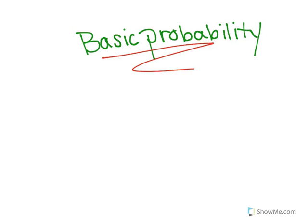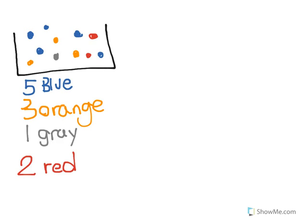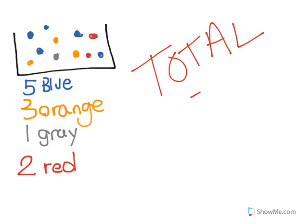Basic probability. The scenario is: we have a box with some marbles in it — five blue, three orange, one gray, two red. The first thing you want to do when talking about basic probability is find the total. Count them up and you should get 11.